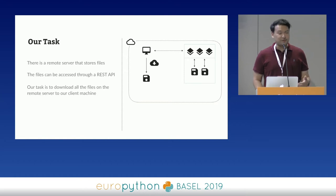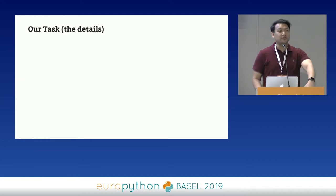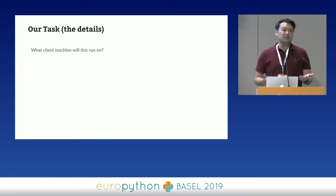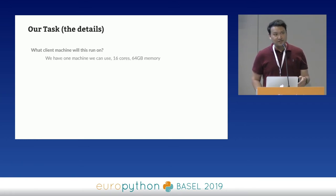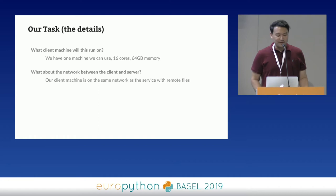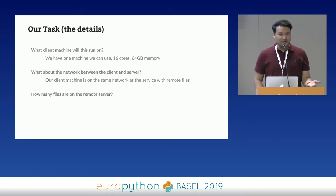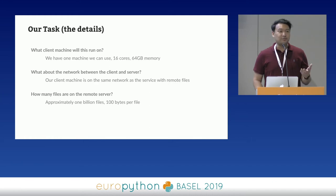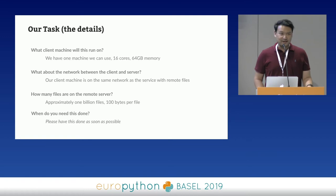It seems, at least conceptually, pretty straightforward. If we ask for some clarifying details, we want to make sure we understand the problem entirely. For this task, we have one machine with 16 cores and 64 gigabytes of memory. The client machine is on the same network as the service. There are a billion files that we need to get, but fortunately the files are fairly small — 100 bytes per file. And of course, we get our favorite answer: please have it done as soon as possible.